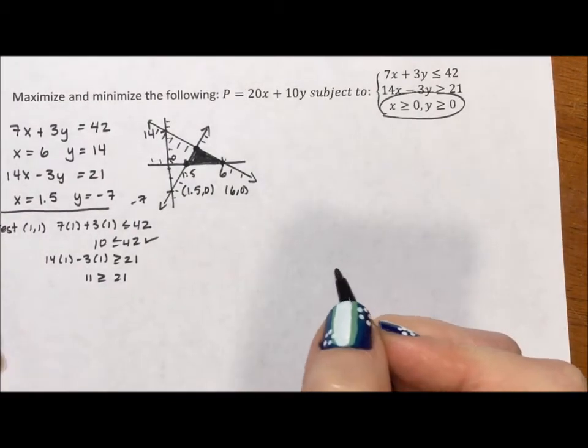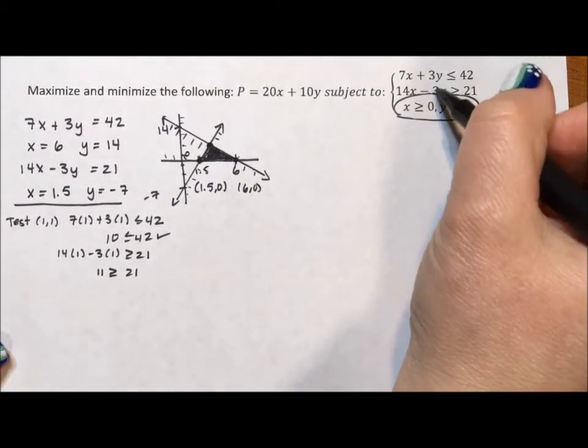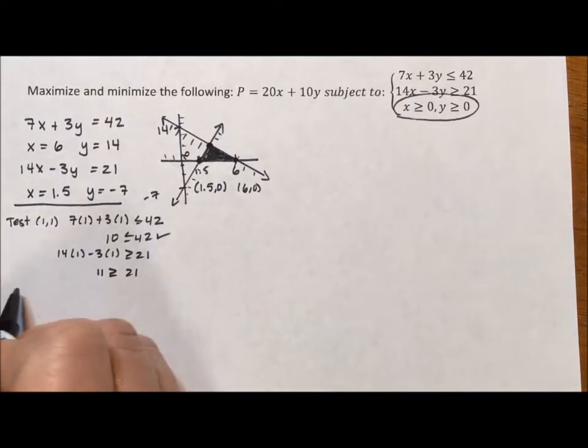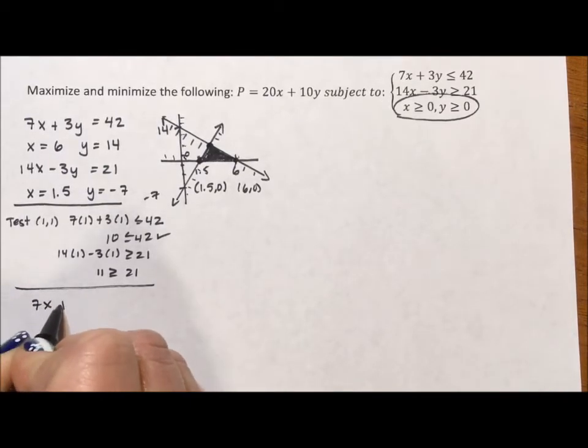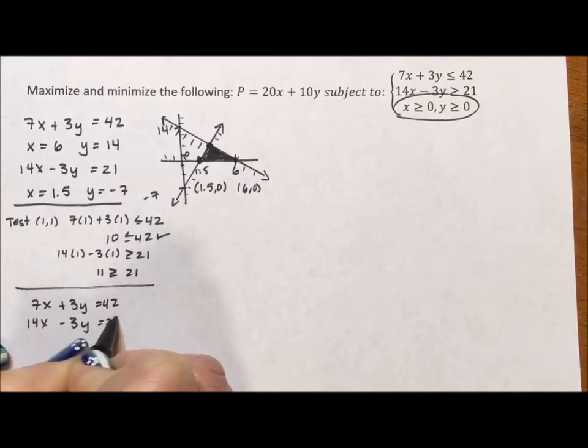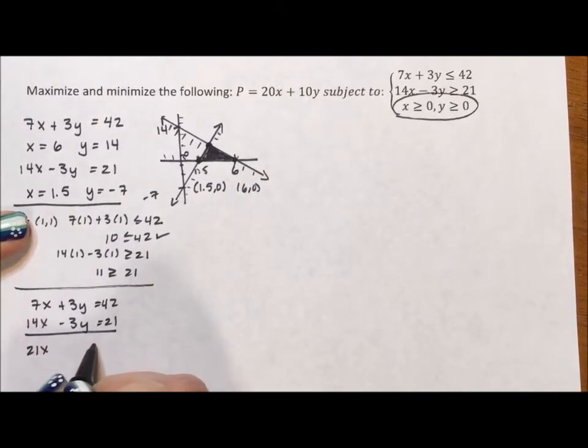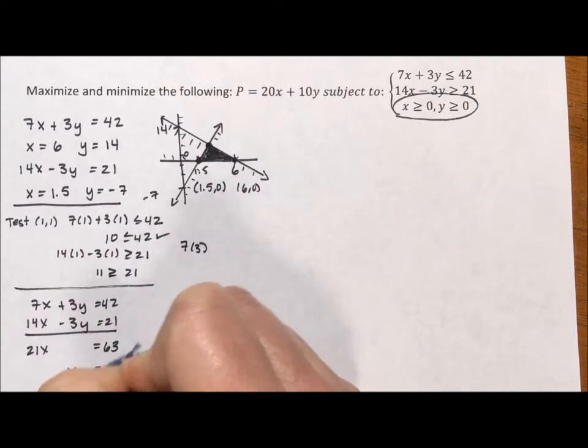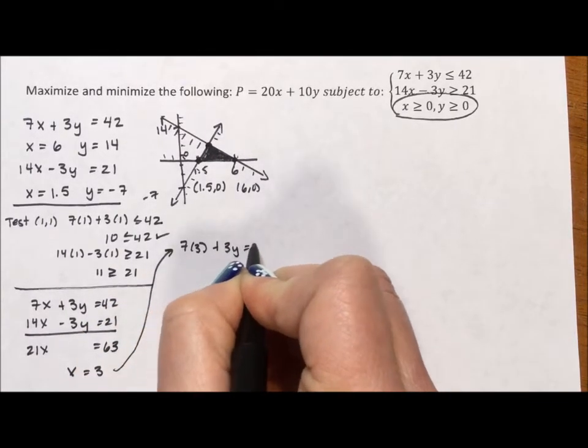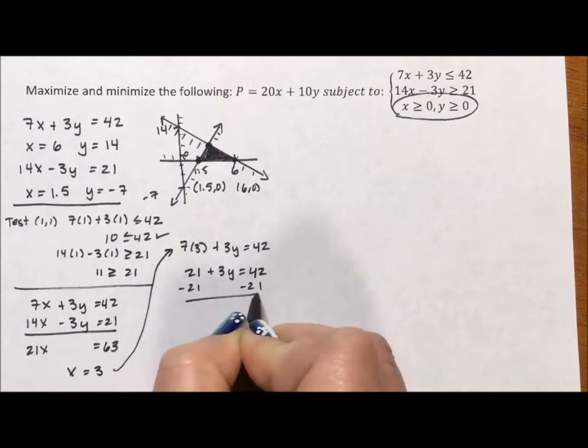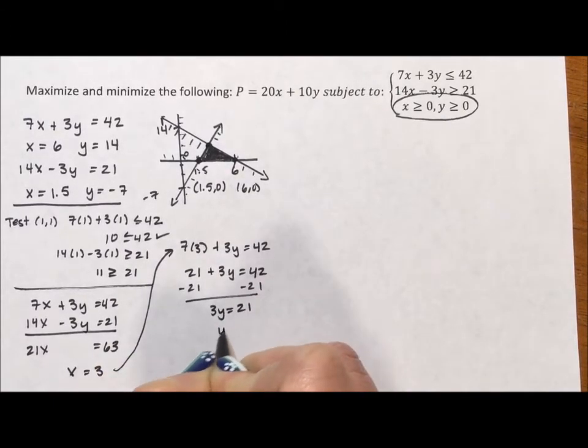So to solve that point, because the y coefficients are equal in coefficient 3 and opposite in sign, I'm going to take the 7x plus 3y equaling 42 and the 14x minus 3y equaling 21. I'm going to add them together to get 21x equals 63, and when I divide, I get that x is equal to 3. I'm going to plug that into the first equation. So 7 times 3 plus 3y equals 42. When 21 plus 3y equals 42, I'm going to subtract that 21 over. 3y is equal to 21 when y is equal to 7.